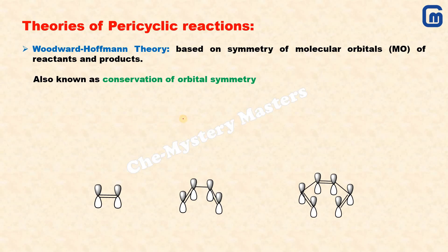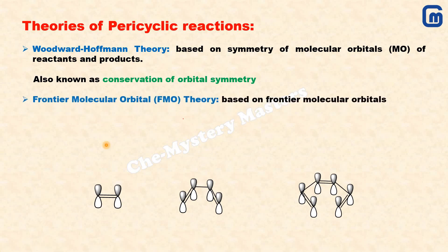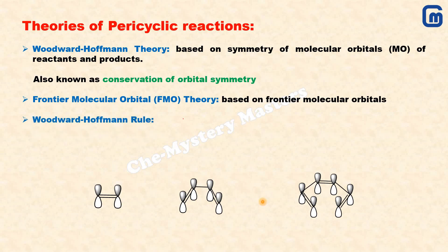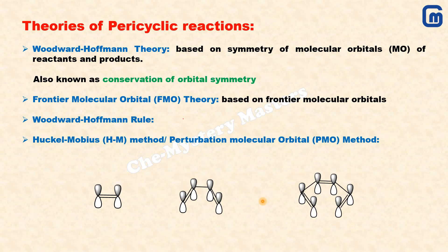The next theory is the Frontier Molecular Orbital theory, or FMO, which is based on the frontier molecular orbitals — the orbitals at the outermost ends of the conjugated system. In ethene, butadiene, and hexatriene, the two terminal orbitals are the frontier orbitals, and the whole of pericyclic reaction chemistry depends on these. There is also the Woodward-Hoffmann rule and the Hückel-Möbius method, also known as the Perturbation Molecular Orbital (PMO) method. All these theories will be covered in detail in coming lectures.